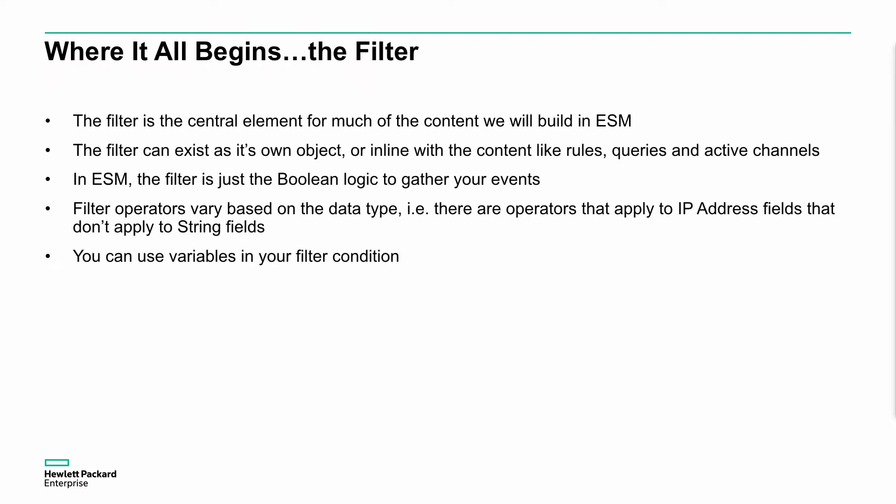So where it all begins — and it's the filter. This is probably the single biggest component and element of how to use ESM and how to get it to drive content. It becomes a central constructual element that we need to use. You filter everything down, you're looking for specific events, you want to view certain events, you use a filter to do that. Whether it's a view for an active channel, whether it's a restriction as part of a report, or whether it's part of the overall correlation process. A filter can be reused across all of these — a single filter can be reused in multiple locations.